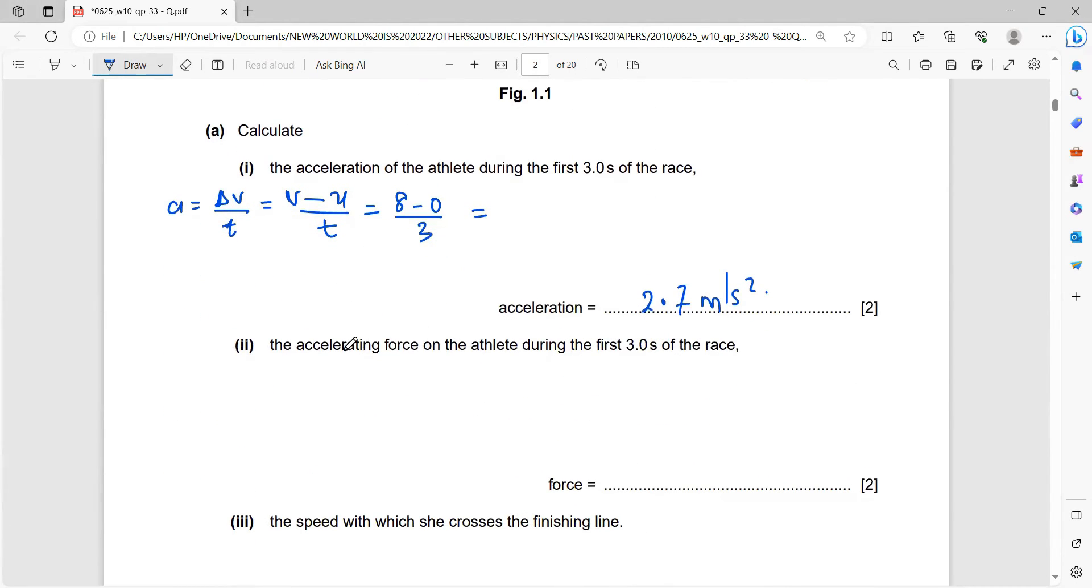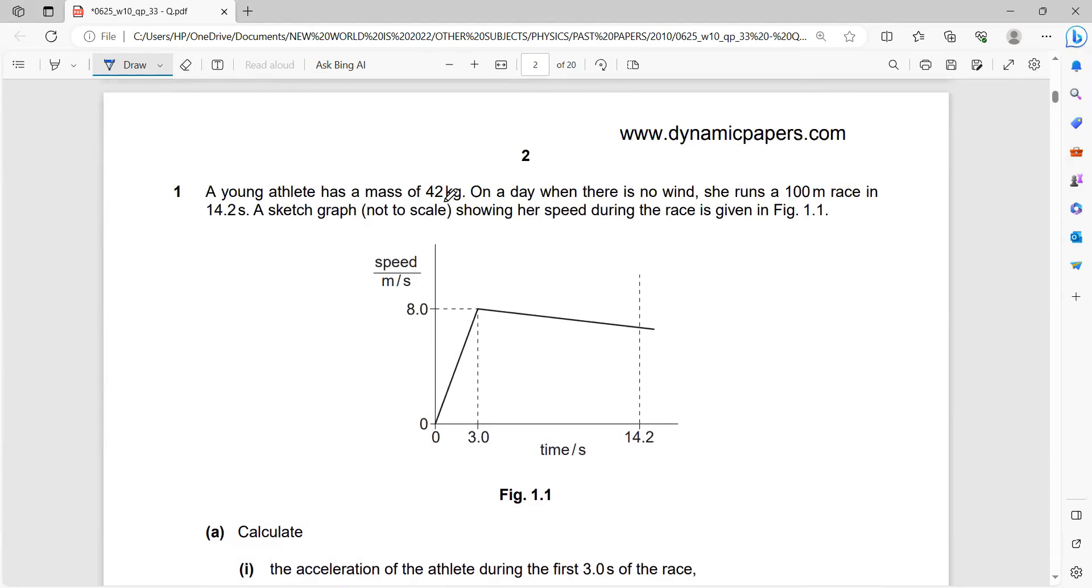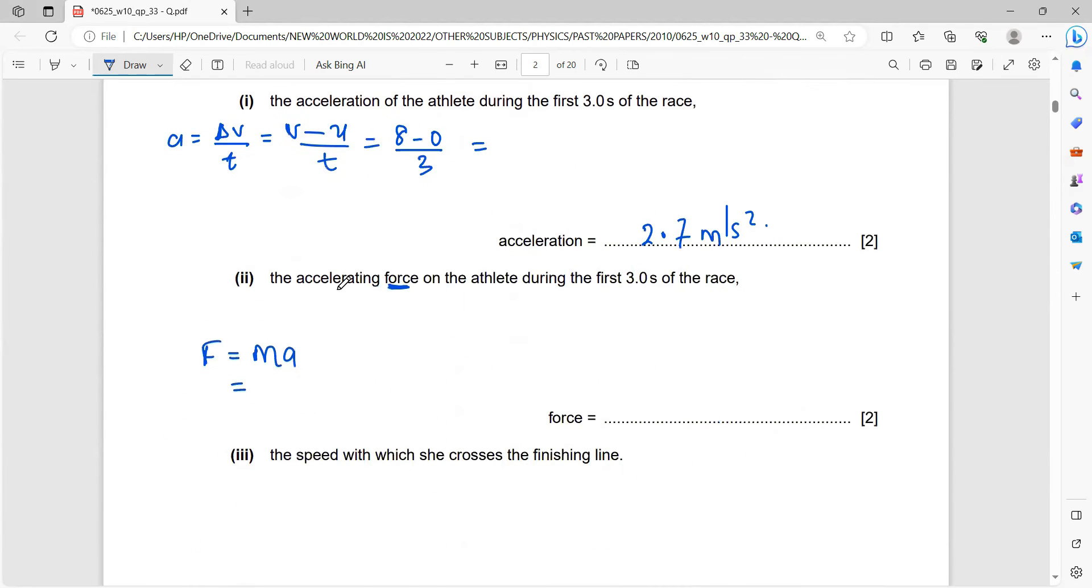Part two says the accelerating force on the athlete during the first three seconds. So your accelerating force is just equal to M times A. And that is, what's the mass? The mass is 42, times the acceleration you just calculated, 2.7. And that gives you 42 times 2.7, so you have 113 newtons.